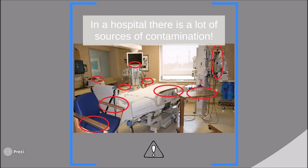In a hospital, there are a lot of sources of contamination, but the most common places are surfaces: beds, chairs, tables, bathrooms, monitors, and buttons of elevators.